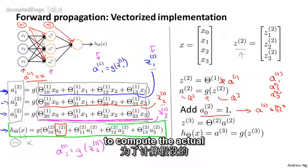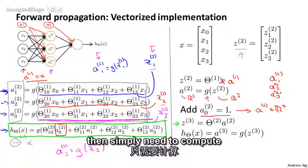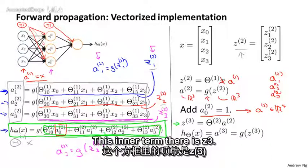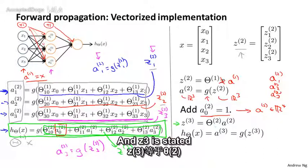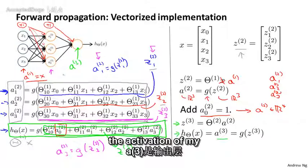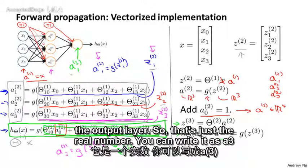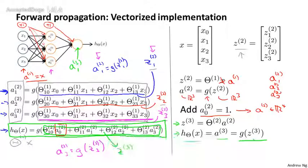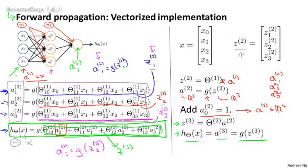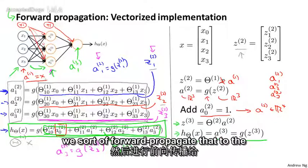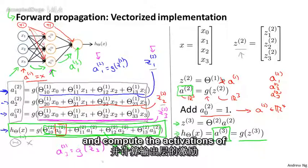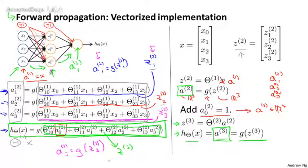Finally, to compute the actual value output of our hypothesis, we simply need to compute z3, where z3 equals theta 2 times a2. And my hypothesis outputs h of x, which is a3 — the activation of the one unit in the output layer — so it's just a real number, written as a3 or a31, and that equals g of z3. This process of computing h of x is also called forward propagation, because we start with the activations of the input units and forward propagate to the hidden layer and then to the output layer.